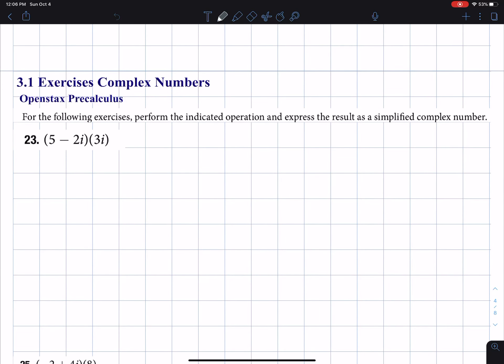In this problem, we're going to multiply 5 minus 2i times the complex number 3i, and we are going to express our final answer in the form a plus bi.